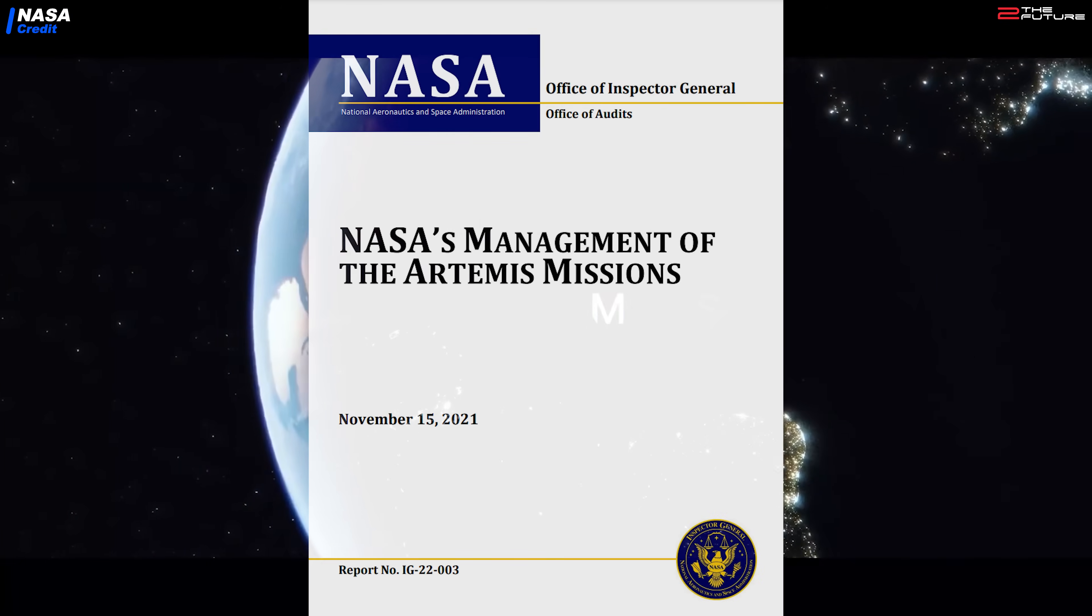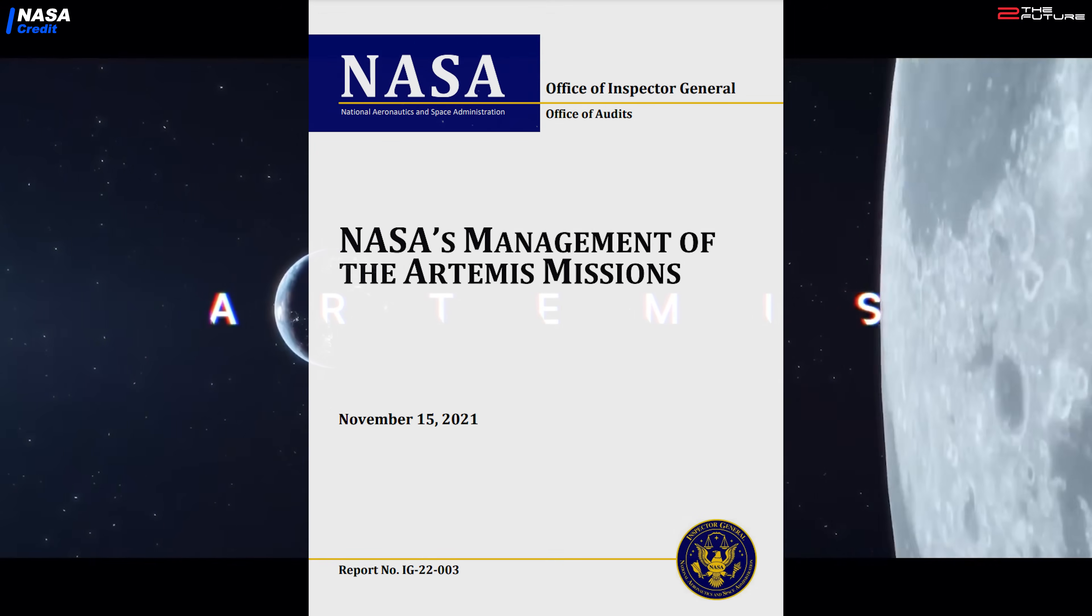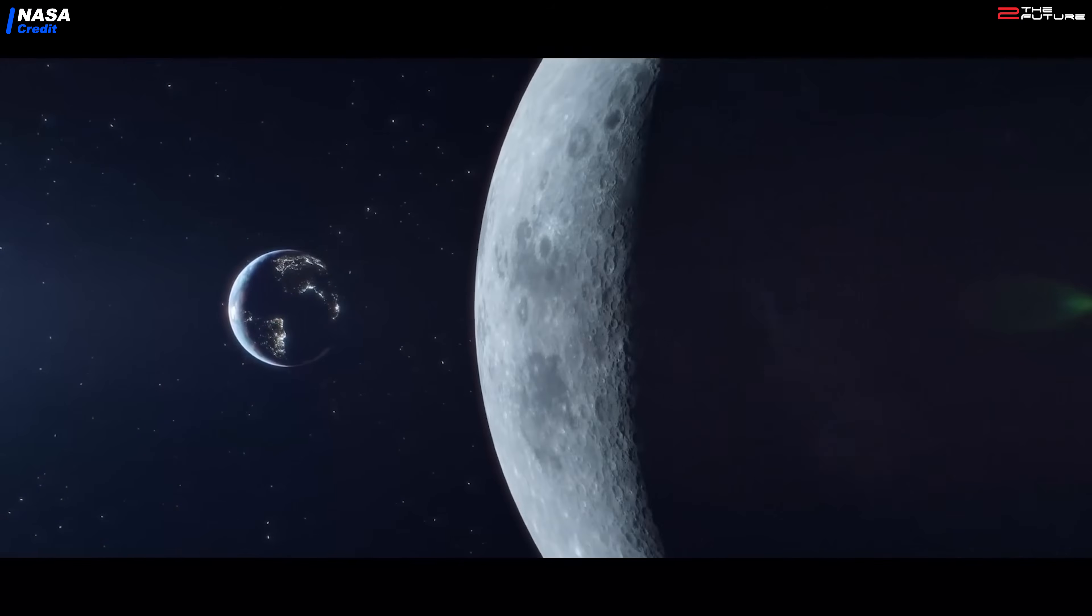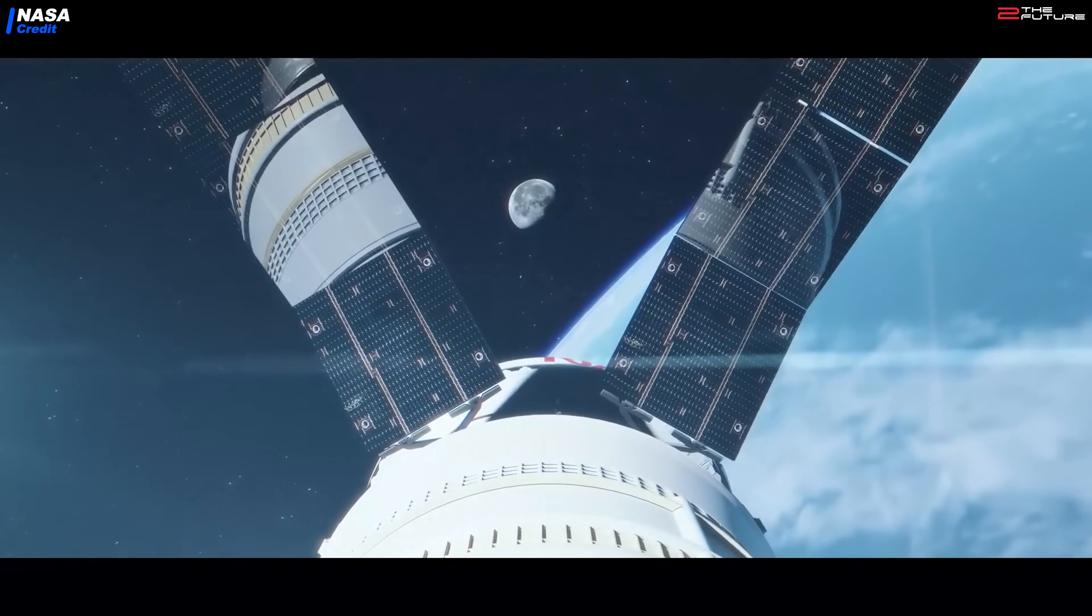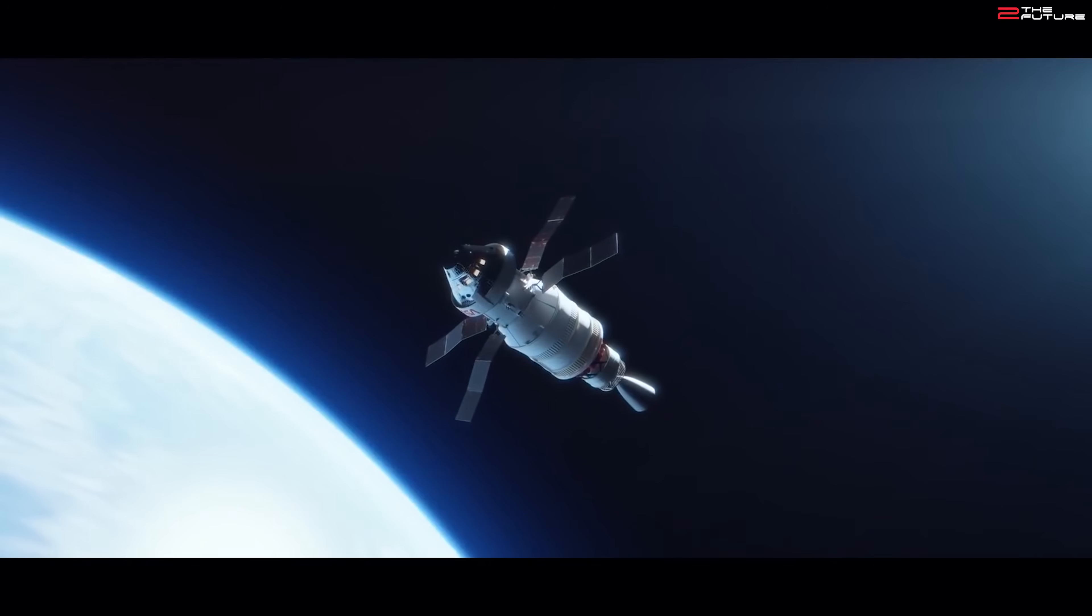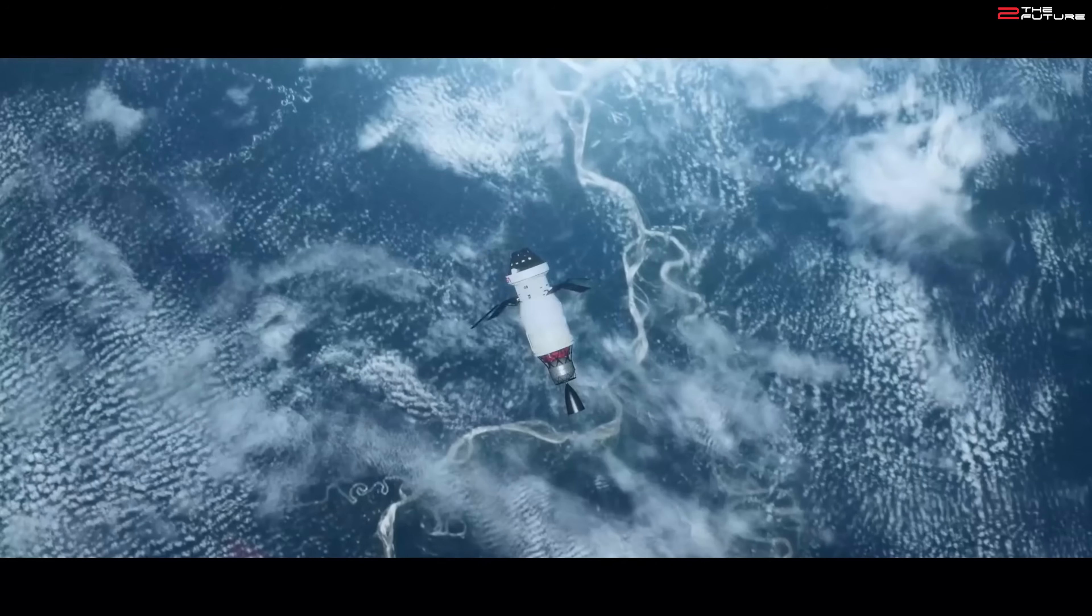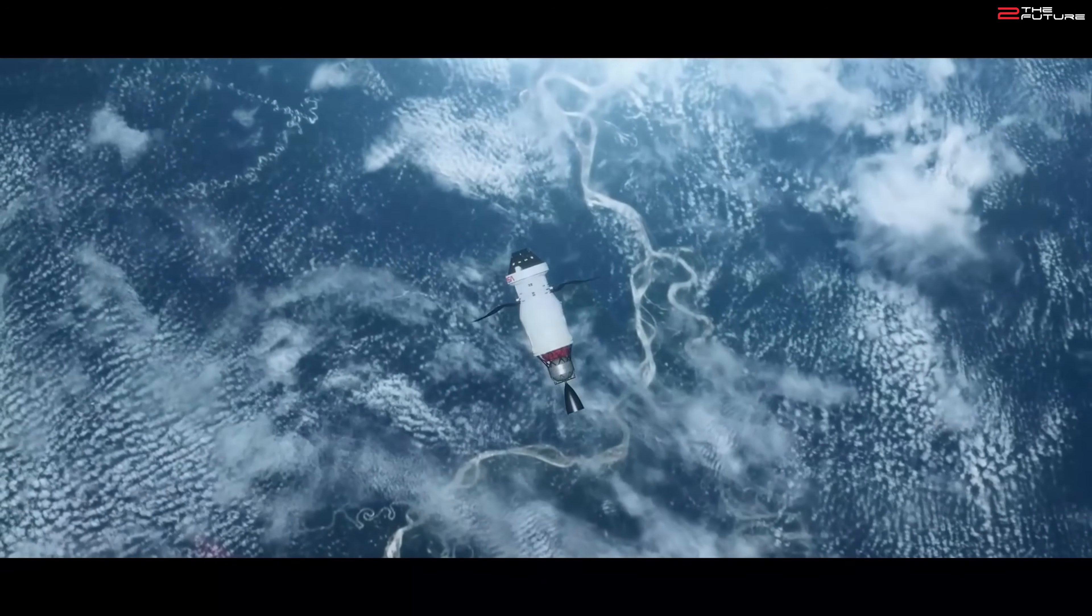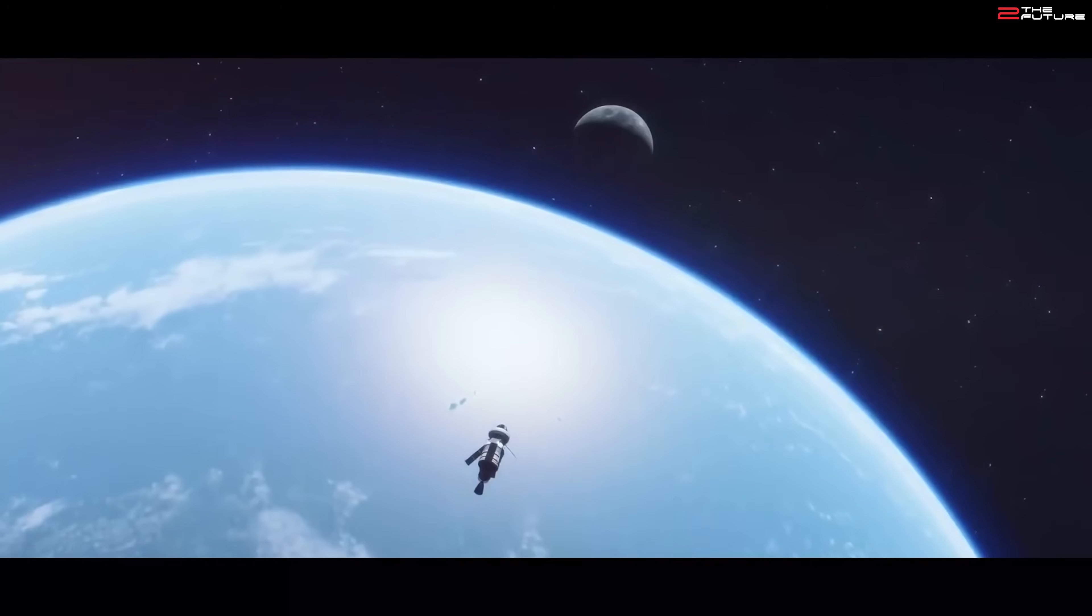The new report from NASA's Office of Inspector General is out and there are quite some exquisite details to be found. Link in the description. For one, the cost estimate for Artemis until fiscal year 2025 is of course a lot higher than the official NASA numbers, as the OIG also included costs from the full Orion development timeline. As we know, Orion already started development back in the Constellation program as early as 2006.